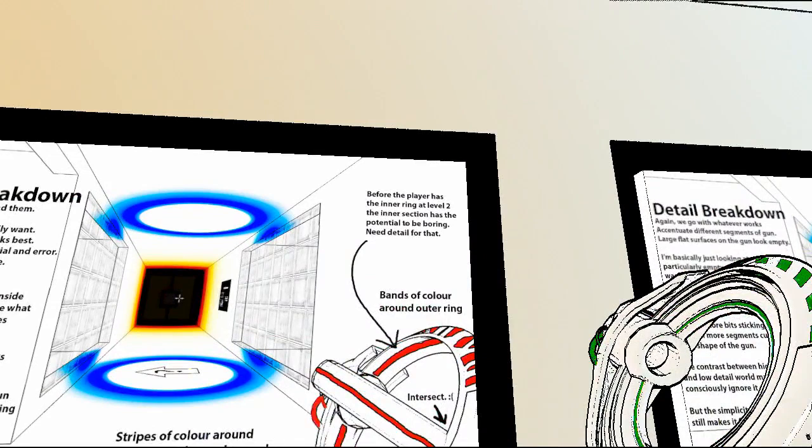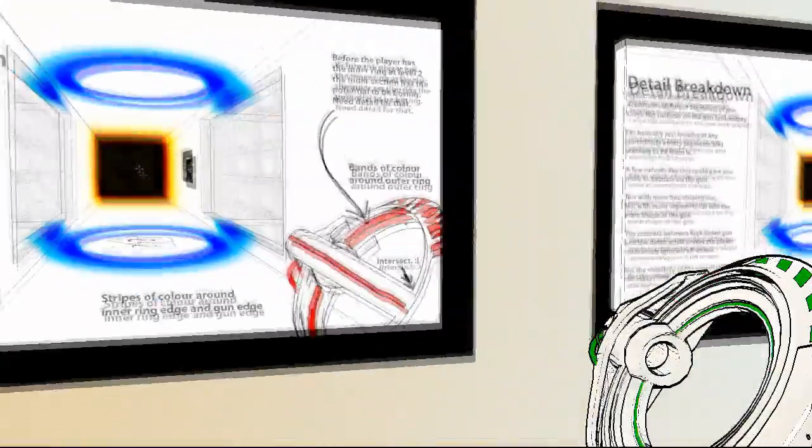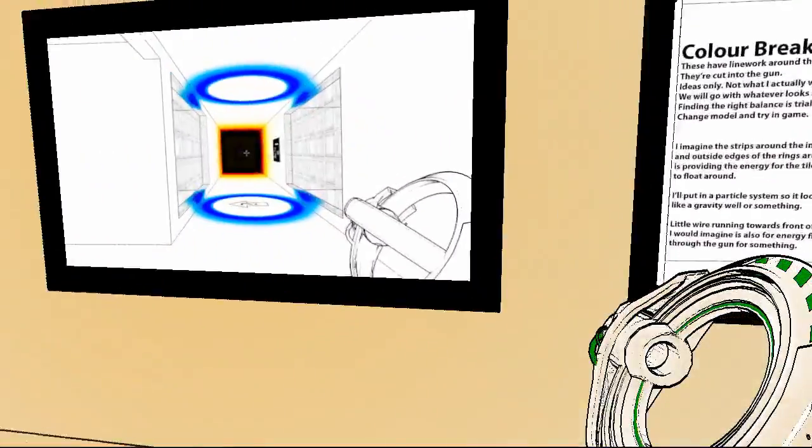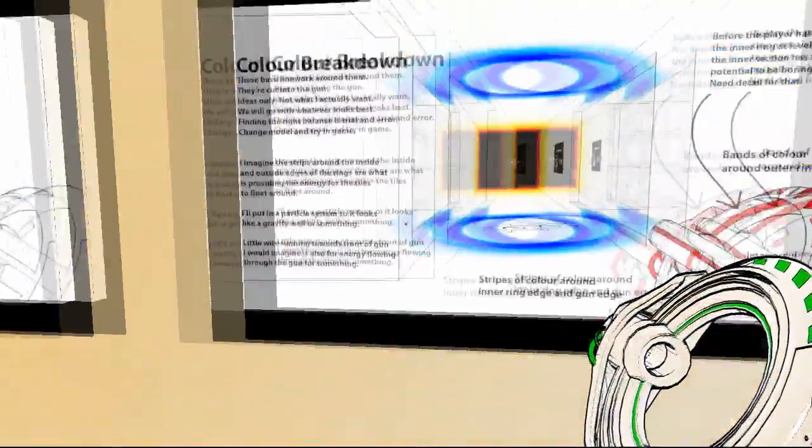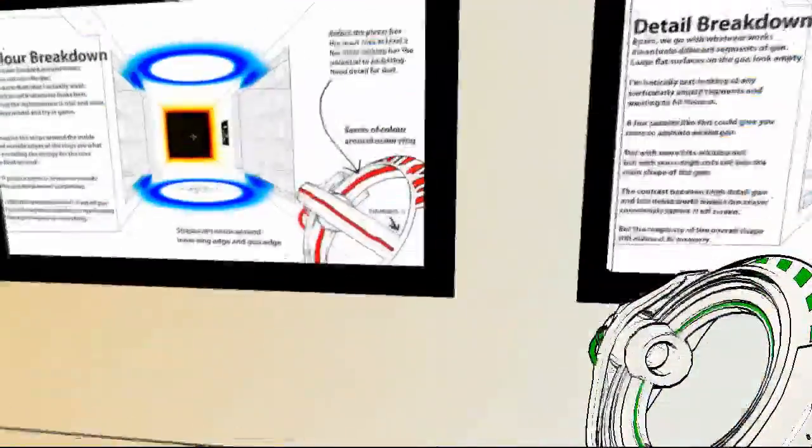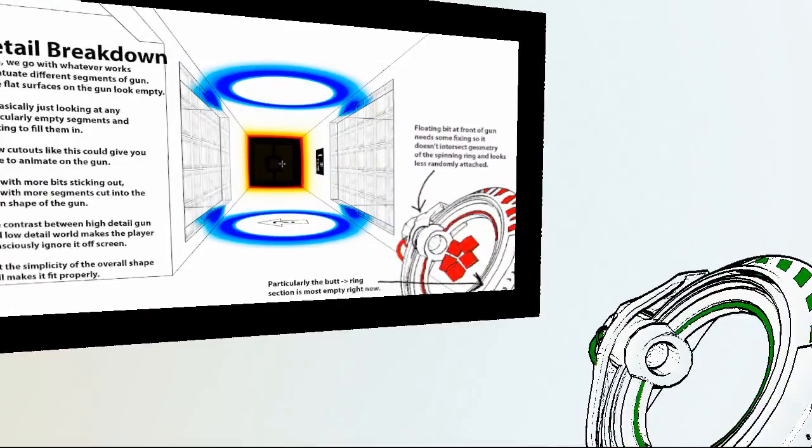Before the player has the inner ring at level 2, the inner section has the potential to be boring. Neat detail for that. Bend of color around the inner ring. Out of the ring. So that's what it originally was supposed to look like, I think. Or that's it without color, sorry. That's level 2 without color. So that's level 2 with color, which is... Look at that. And there's this one.